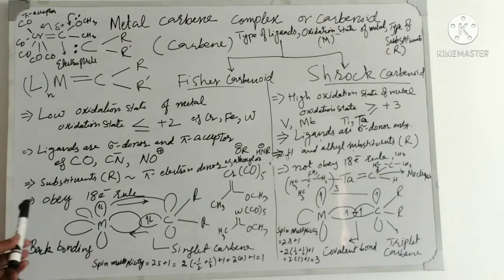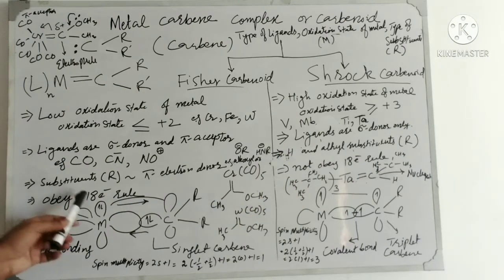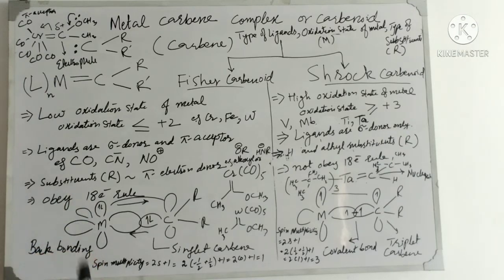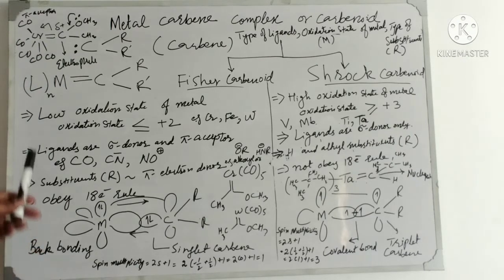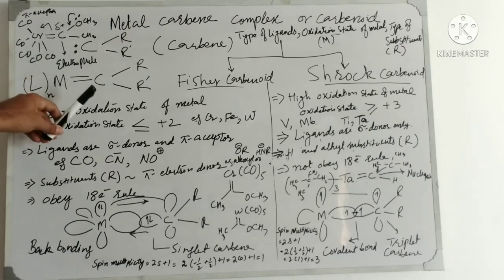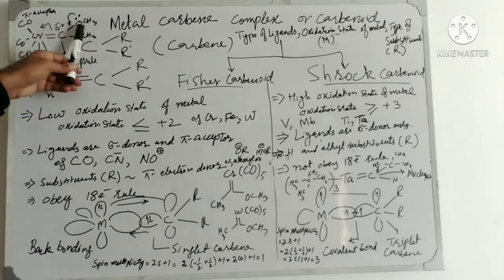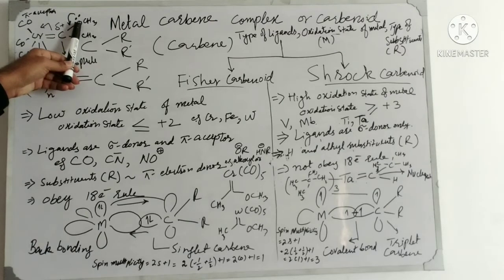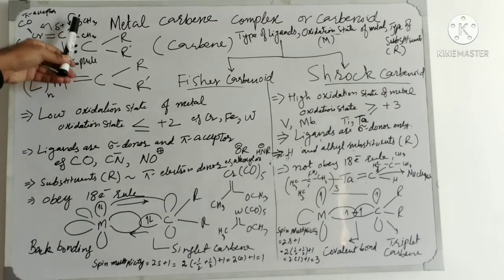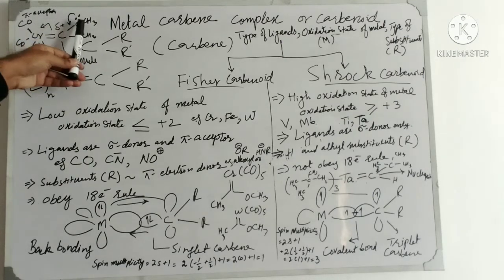Fischer Carbenoids normally obey the 18-electron rule, whereas in the case of Schrock Carbenoids, they normally do not obey the 18-electron rule. This is an example of Fischer Carbenoid — you can see this ligand, which is the methoxy group. This substituent is a pi electron donor.